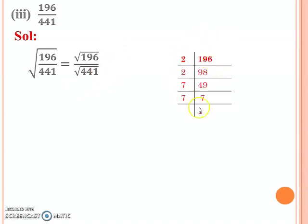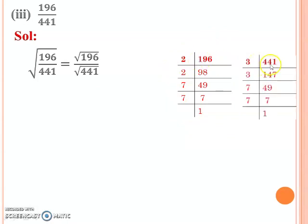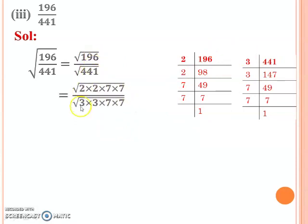For 196, the prime factorization gives prime factors: 2, 2, 7, 7. For 441, the prime factors are: 3, 3, 7, 7. Now in the prime factorization method for square roots, you replace the number under the square root with its prime factors. So 196 becomes 2 × 2 × 7 × 7 and 441 becomes 3 × 3 × 7 × 7.